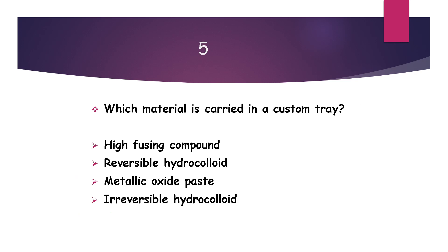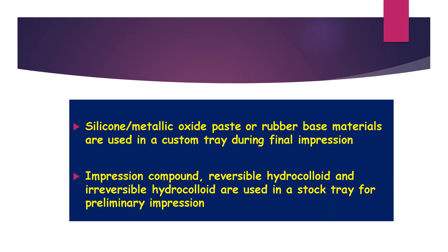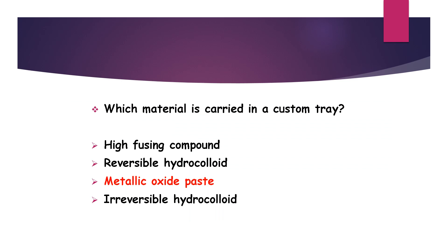Next question: which material is carried in a custom tray? Options are high-fusing compound, reversible hydrocolloid, metallic oxide paste, and irreversible hydrocolloid. Silicone or metallic oxide paste and rubber-based materials are used in a custom tray during final impression. Impression compound, reversible and irreversible hydrocolloids like agar and alginate are used in stock trays for preliminary impressions. So metallic oxide paste is the correct option.